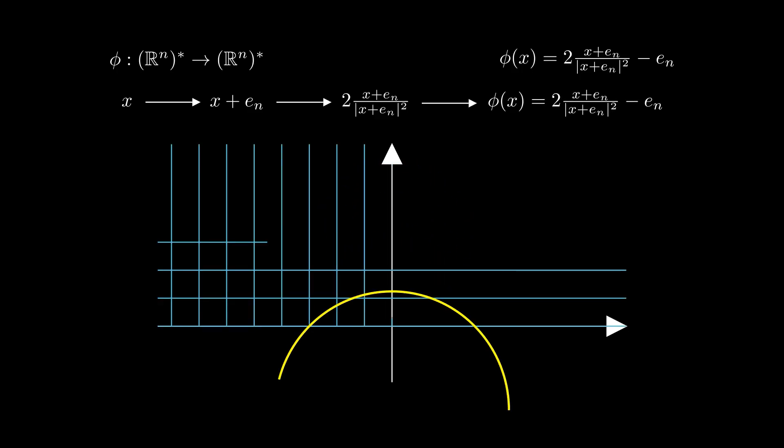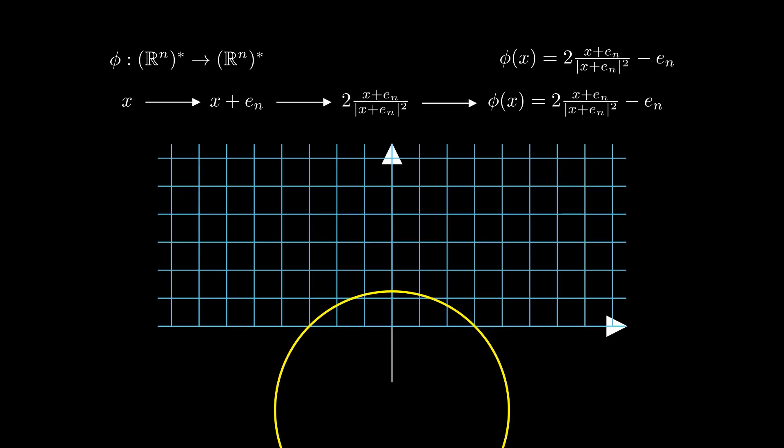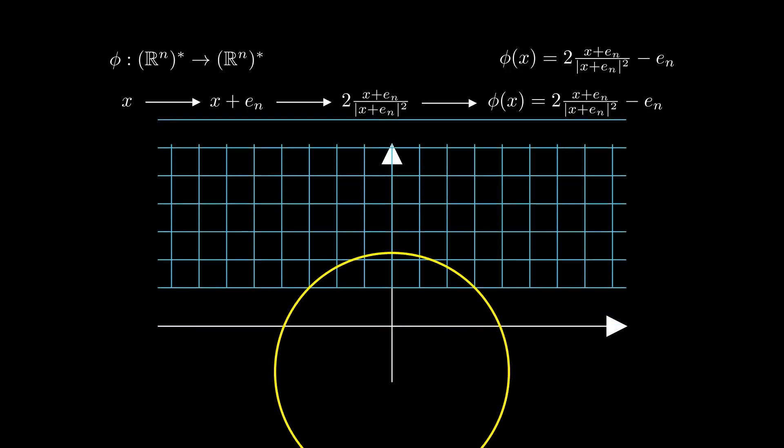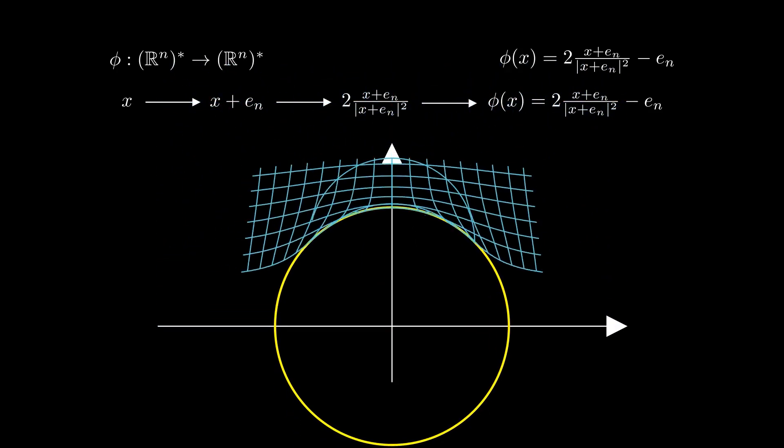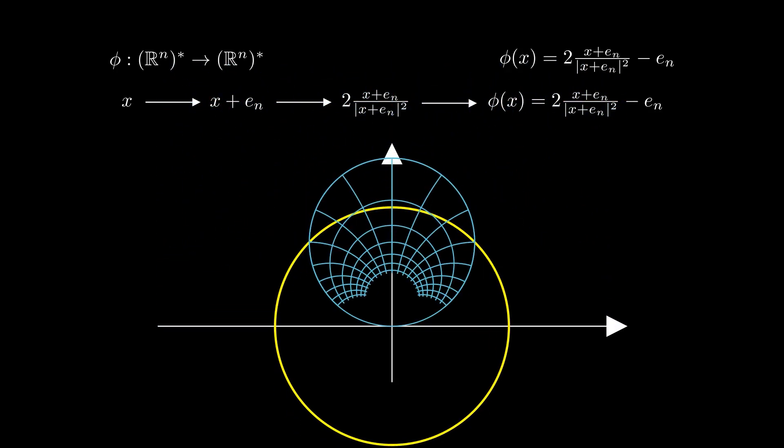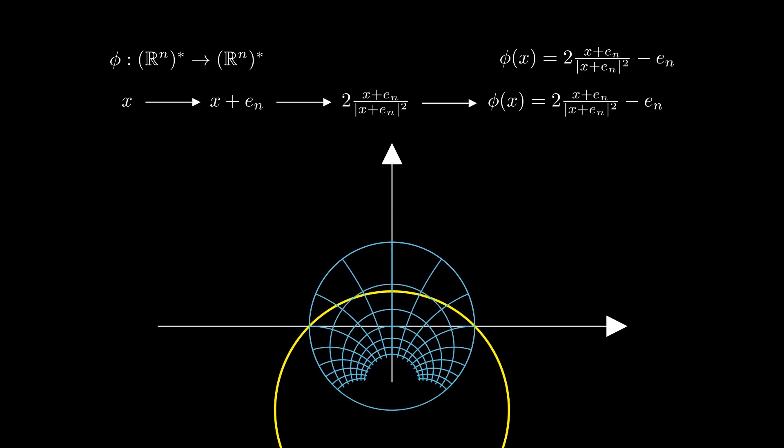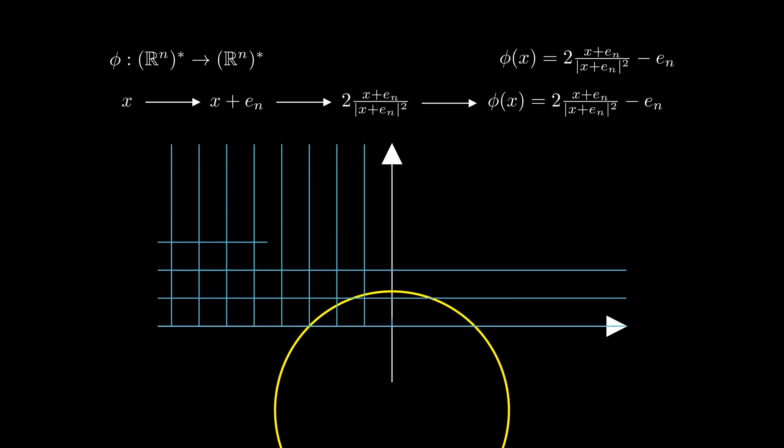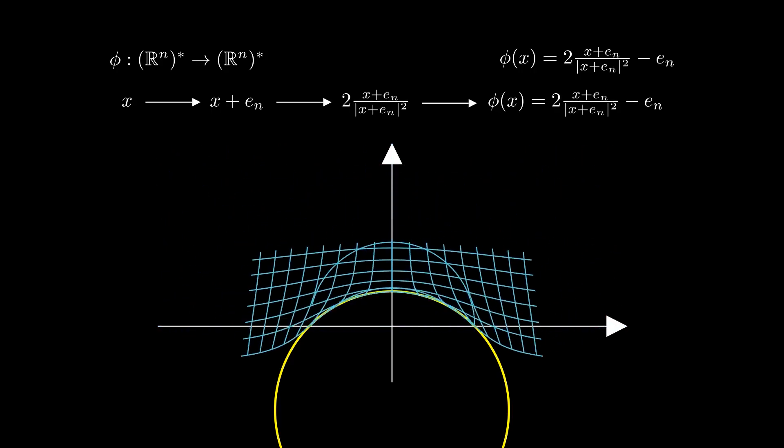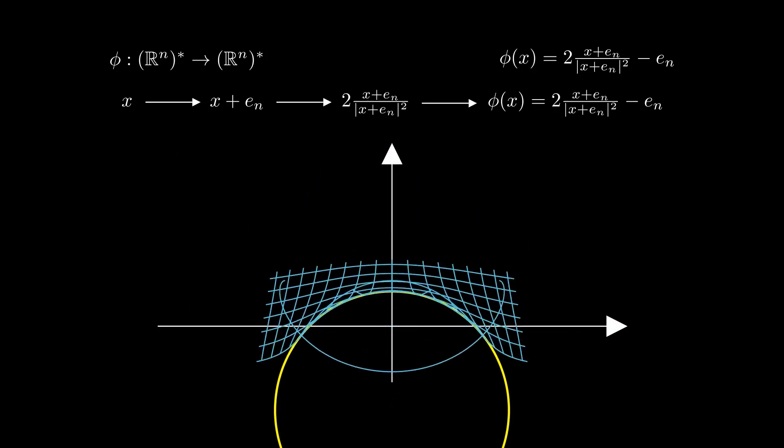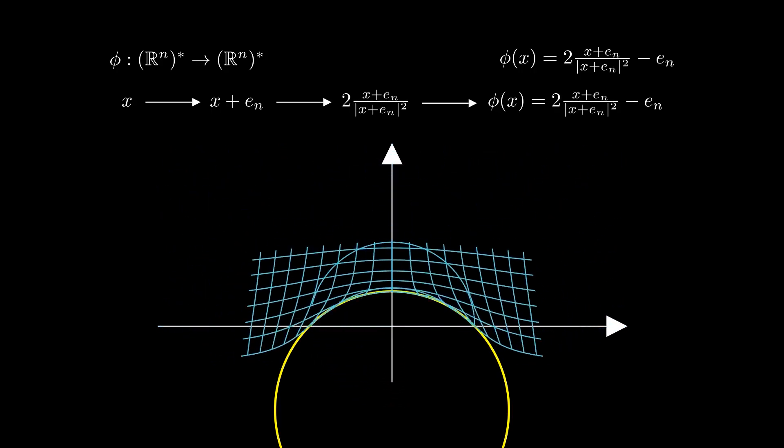This becomes more interesting if we keep track of this yellow sphere, the one of radius square root of 2 and center (0,0,0,-1). After shifting it up, the second transformation is a reflection across this sphere, and then the third transformation returns the sphere back to its original place. So when we look at these three transformations combined, what we get is simply the reflection across the yellow sphere, sending the upper half space to the unit ball.